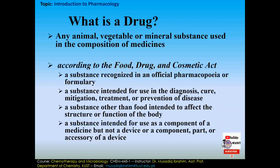Another definition is a substance, other than food, intended to affect the structure or function of the body. For example, if you have acidity and take an antacid, it decreases the amount of acid inside the body, altering the body's function. Sometimes it affects structure — for example, if you have a bone fracture and are given painkillers and antibiotics so that the bone can heal properly over time.